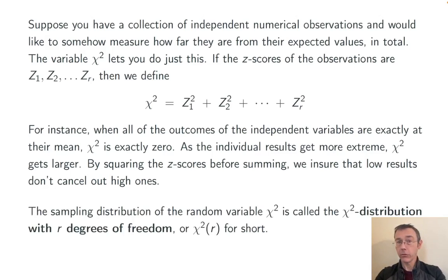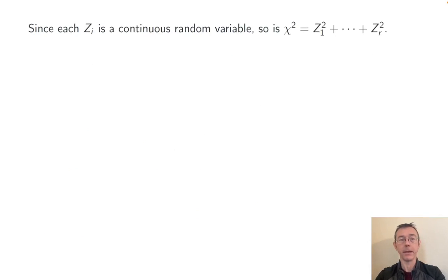The sampling distribution of this random variable chi-squared is called the chi-squared distribution with r degrees of freedom. So here r is the number of z-scores that are going in, the number of those independent observations. By the way, notice the name of the random variable is the same as the name of the distribution. The context usually makes the difference clear.